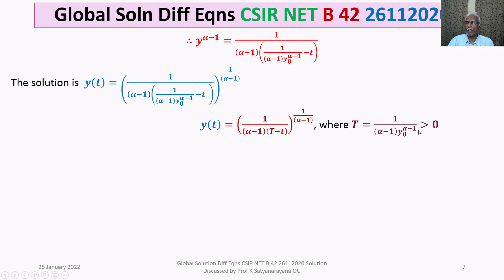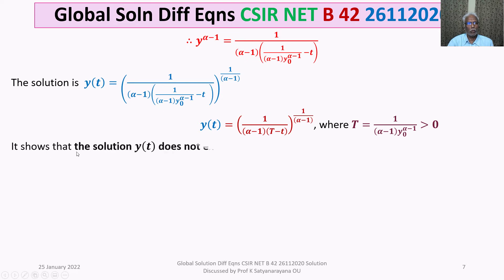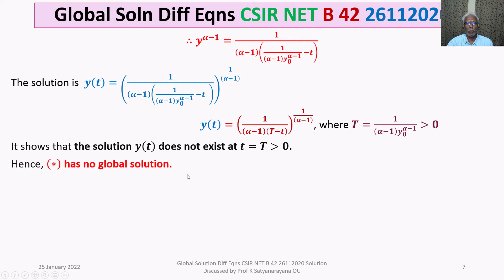Since capital T > 0, the solution y(t) exists for all t > 0 except at t = capital T, where y(t) is undefined. This means the solution does not exist for all t > 0, so it is not a global solution. Hence, (*) has no global solution.